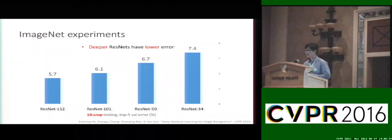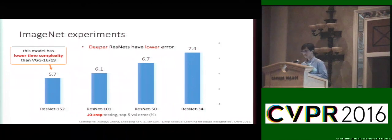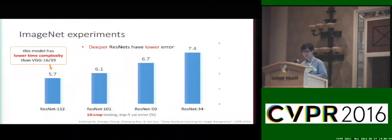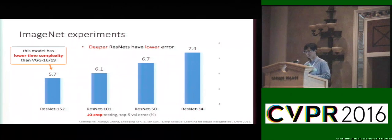Here are more results on the ImageNet dataset with ResNet variants of 34, 50, 100, and over 150 layers. The deeper models achieve lower error on ImageNet. We also note that even our deepest model with over 150 layers has lower time complexity than the popular VGG model. Our hypothesis is that if a deeper model is more expressive, we can use fewer filters to achieve good results and significantly reduce time complexity.